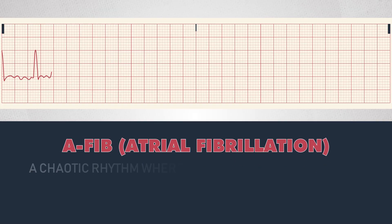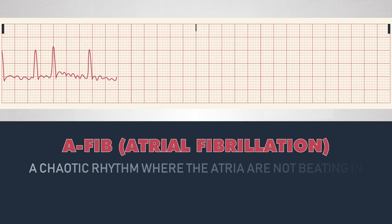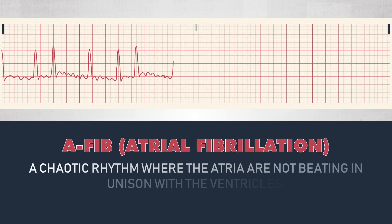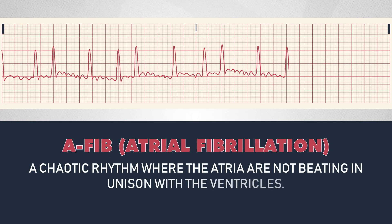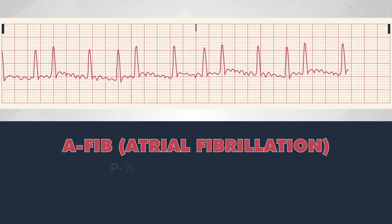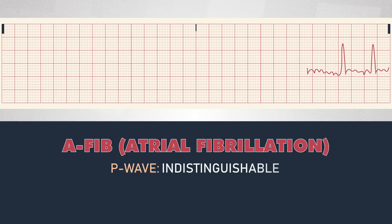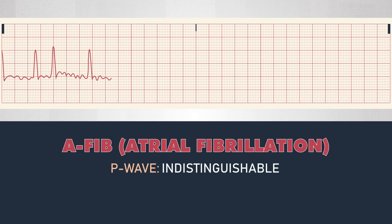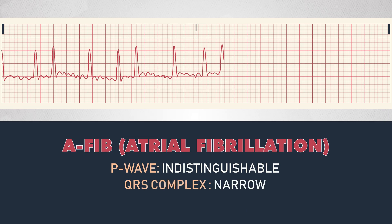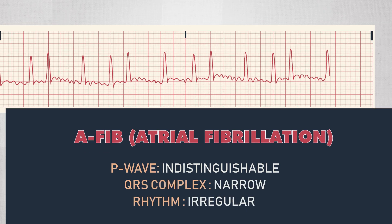AFib, or atrial fibrillation, is a chaotic rhythm where the atria are not beating in unison with the ventricles. There are no distinguishable P waves seen on the strip. We see many small waves instead. The QRS is narrow, and the rhythm is irregular and rapid.